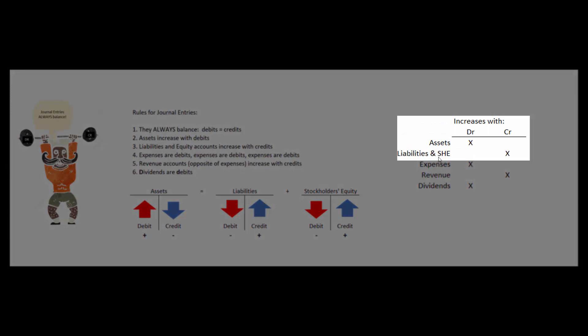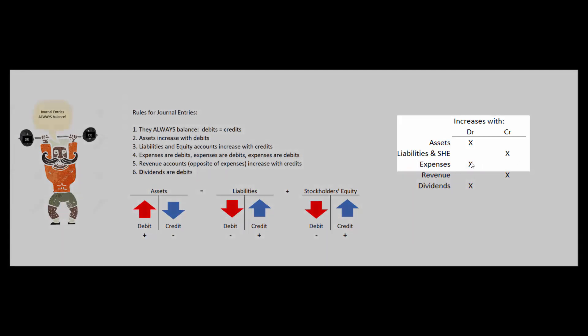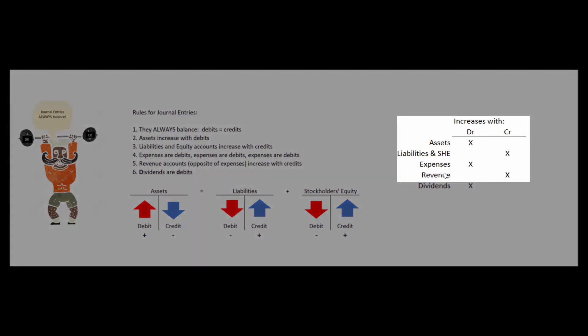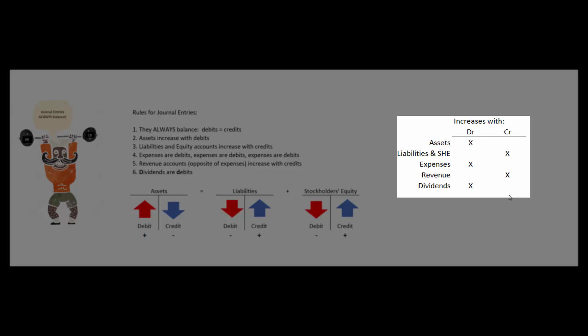Liabilities and shareholders' equity increase with credits — easy to remember because credit means right and those accounts are on the right-hand side of the balance sheet. Expenses are debits — you've already memorized that. The opposite of expenses is revenue, so revenue increases with credits. Dividends increase with debits because they also start with a D.